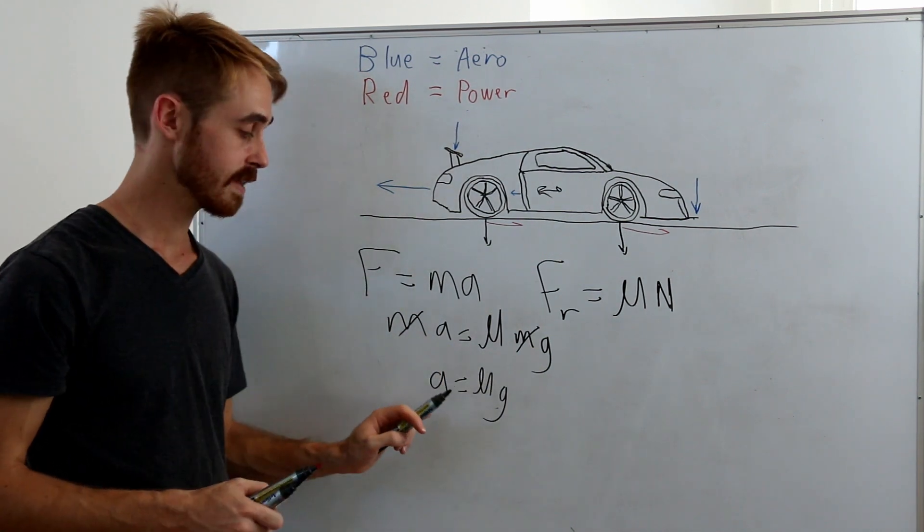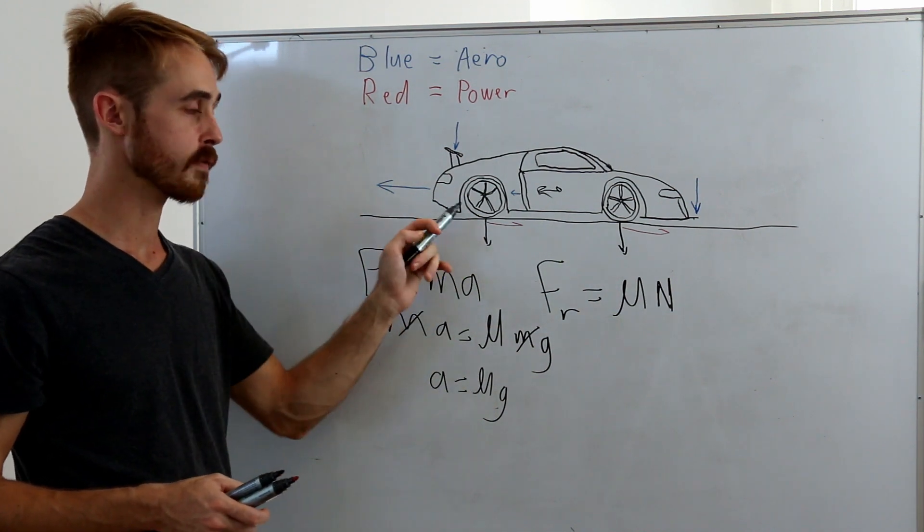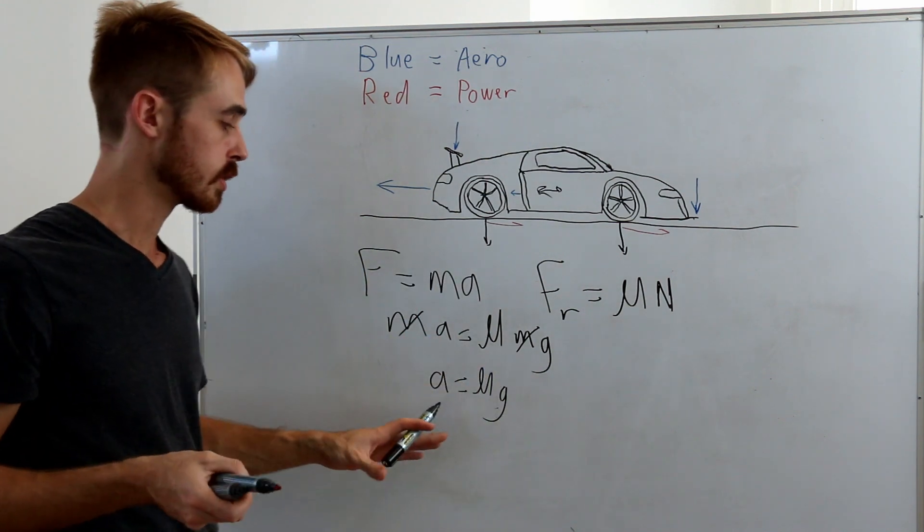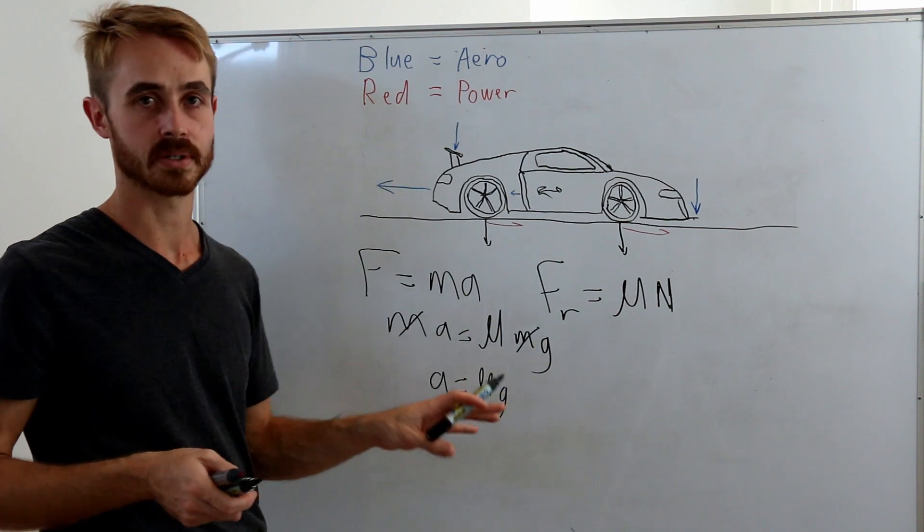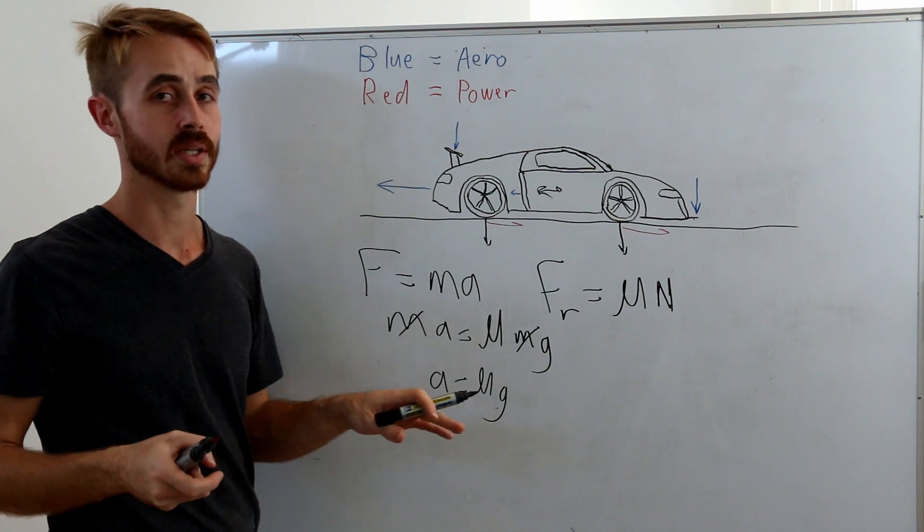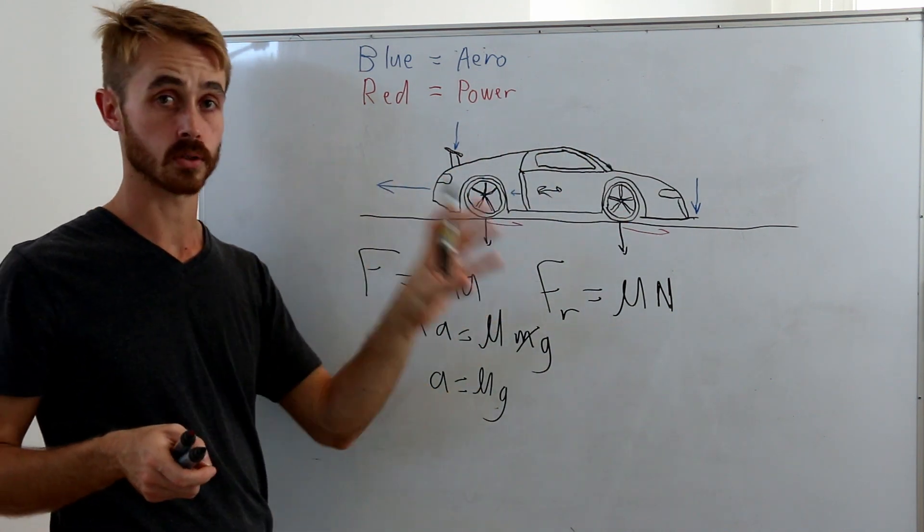This means that if we are traction limited in the car, the acceleration will equal our coefficient of friction at the ground times the gravitational constant, which is a constant. So essentially that's our acceleration in g, regardless of what the weight of the car is. The weight of the car does not change the traction-limited grip as long as there is no downforce involved—so we're at low speed or stationary.